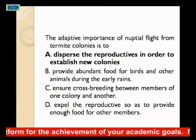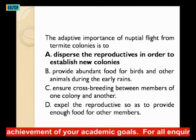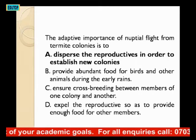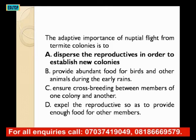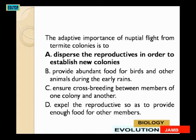The next question: the adaptive importance of nuptial flies from termite colonies is to — A: disperse the reproductives in order to establish new colonies; B: provide abundance for birds and other animals during the early rains; C: ensure cross-breeding between members of one colony and another; D: expel the reproductives so as to provide enough food for other members. The importance of nuptial flight is when reproductives leave their colony, fly away, go to a new place, lose their wings, and start another colony there.